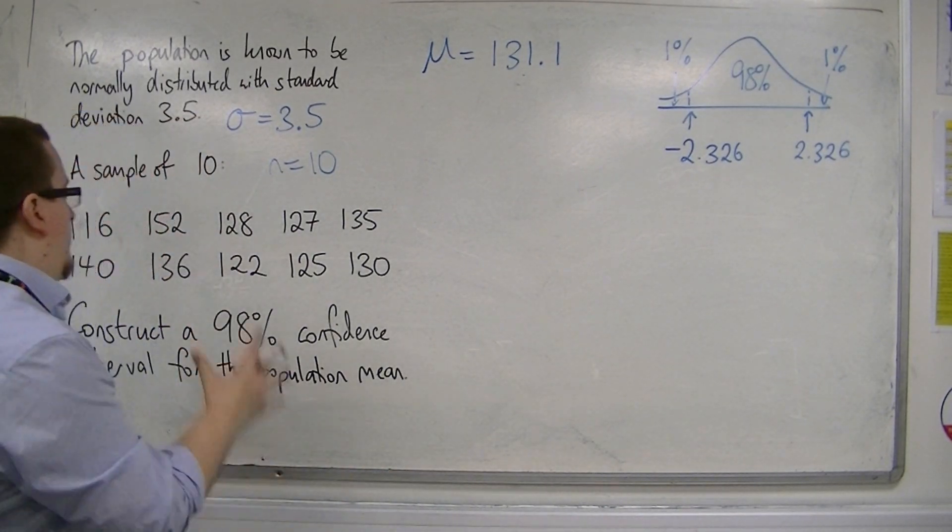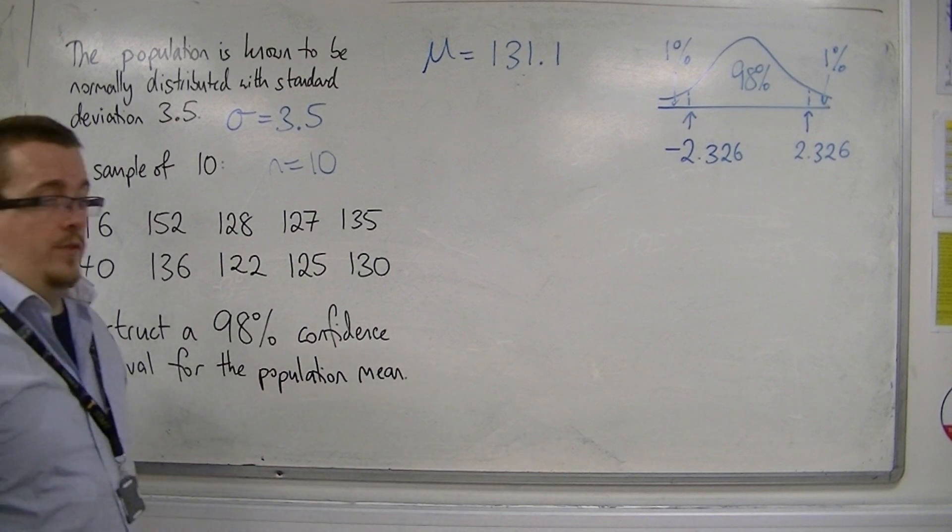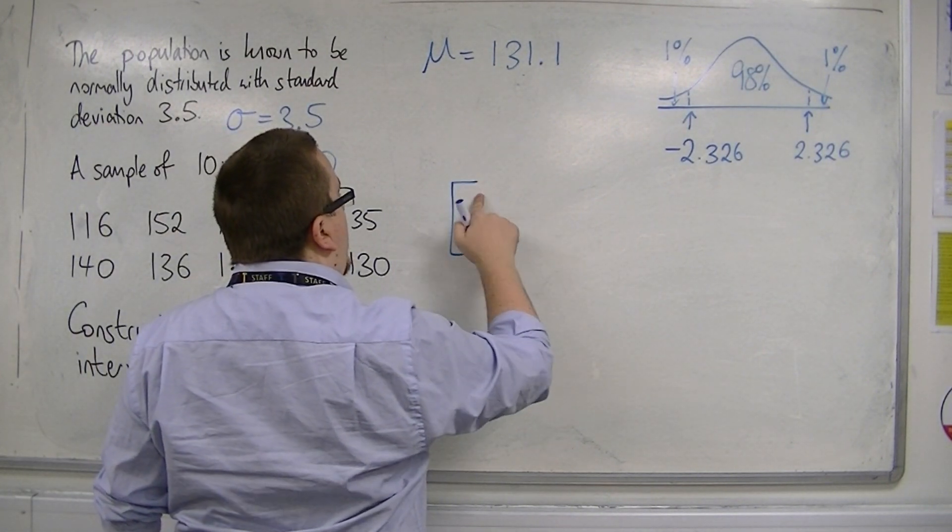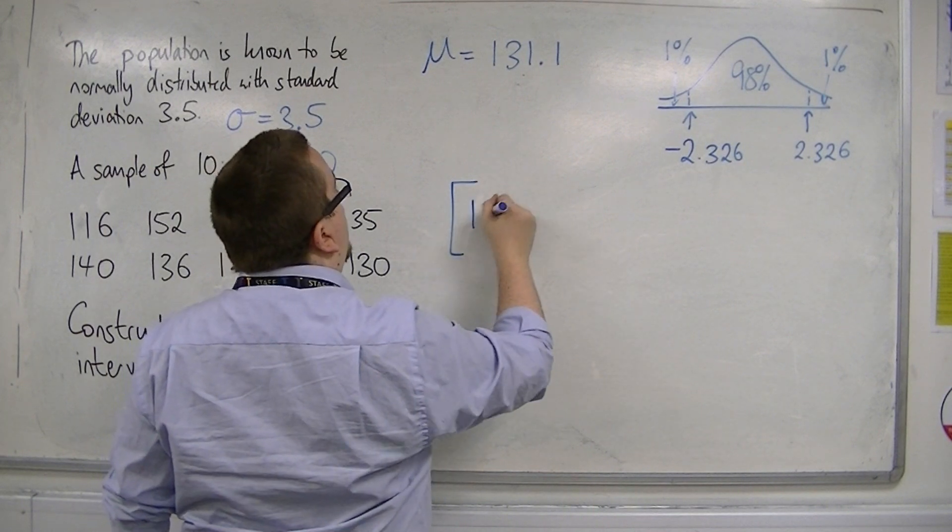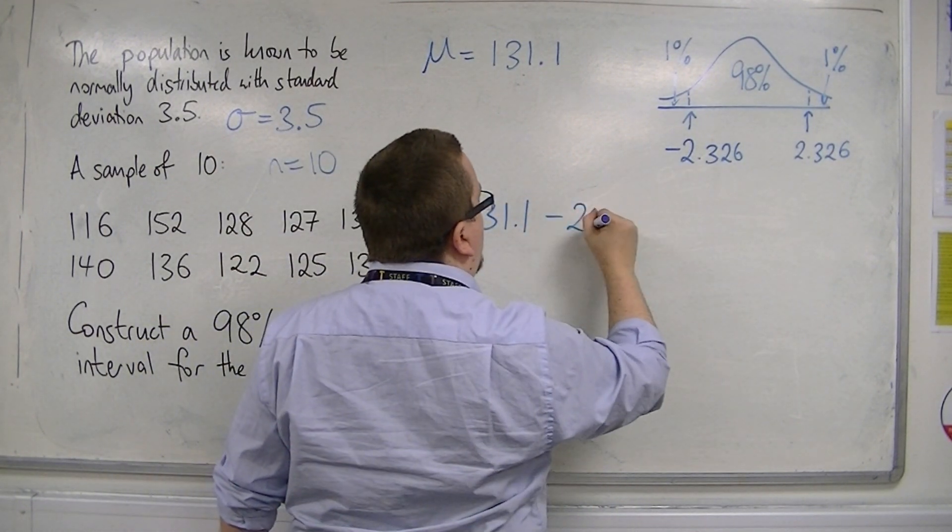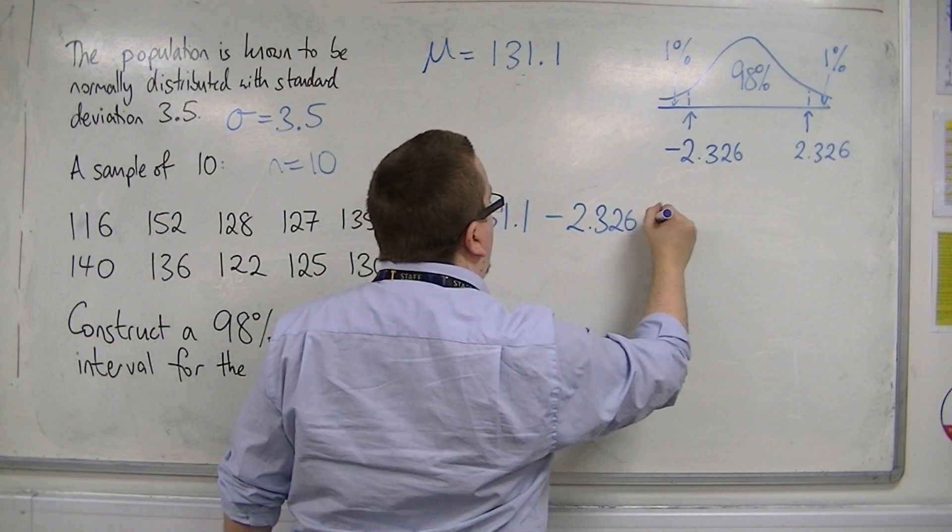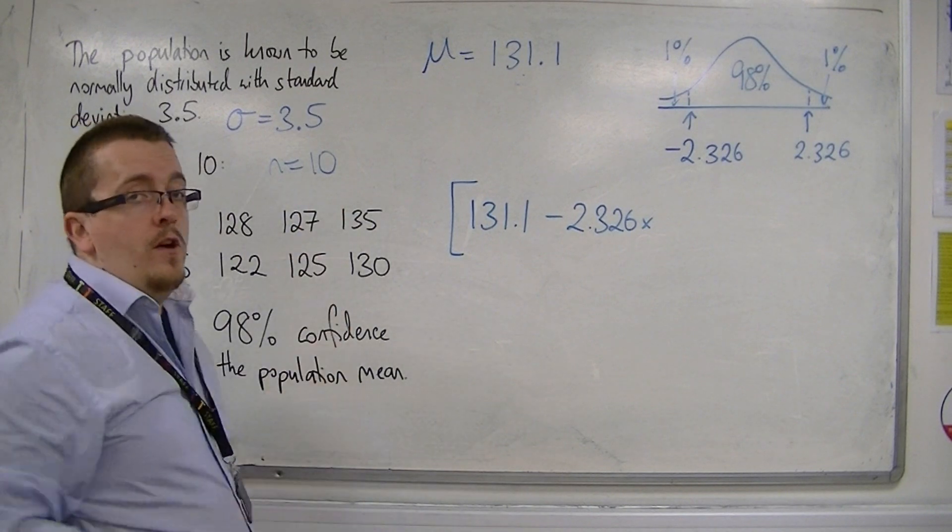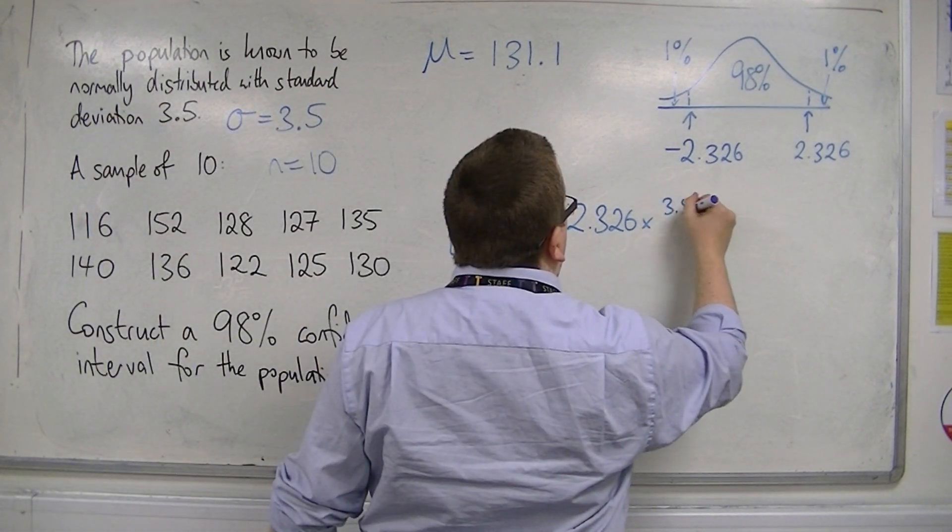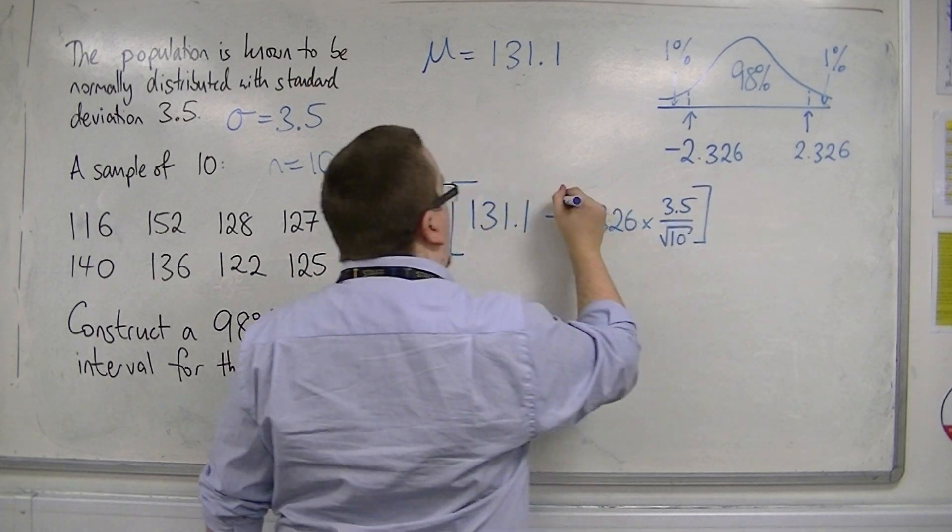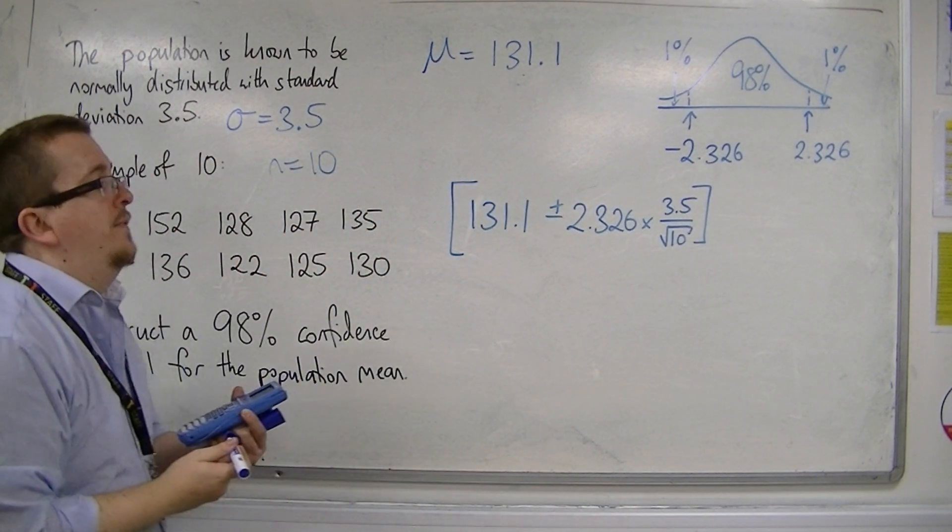So, we're now ready to construct the confidence interval. Because the confidence interval will be the mean, 131.1, take away the z value, 2.326, times by the standard error, which is 3.5 over the square root of 10. Okay, and it will be plus and minus those two values.